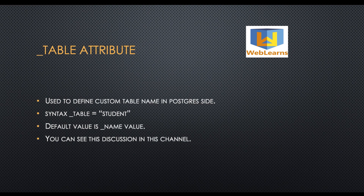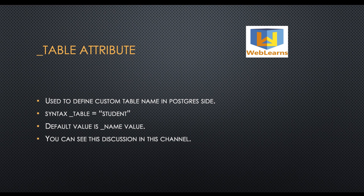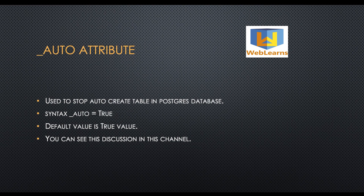The underscore table attribute is useful when, for example, whenever you use the underscore name attribute, Odoo automatically creates the same table name inside PostgreSQL. But if you want to change the default table name, you can use underscore table equal to a string value with a unique table name, and Odoo will create that table in the PostgreSQL database. By default, the value is derived from underscore name.